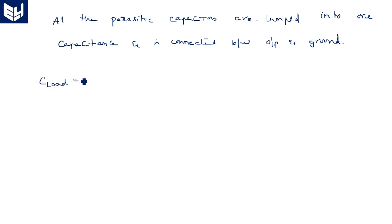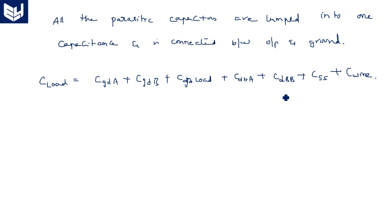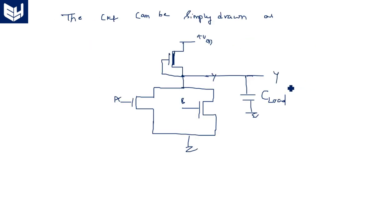The lumped load capacitance is: C_load = C_GD(A) + C_GD(B) + C_GD(load) + C_DB(A) + C_DB(B) + C_SS + any wiring capacitance present. The load capacitance at the output node of the equivalent inverter for this NOR gate is always larger than this lumped internal capacitance. This concludes the discussion on the internal capacitance and transient analysis of the nMOS two-input NOR gate.